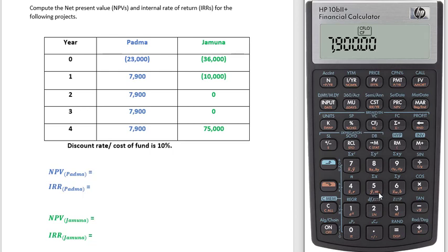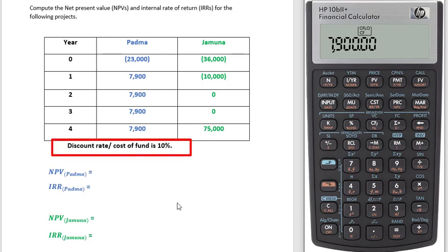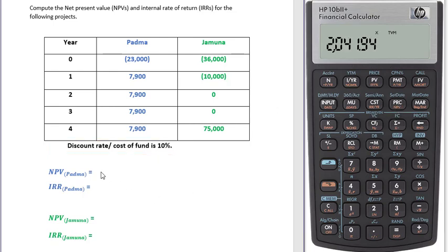Now to calculate NPV we need a percentage — a discount rate, or cost of fund, or cost of capital. Here our discount rate is 10%, so enter 10, then press the I/YR interest rate button. Now calculate NPV: press the orange Shift and this button — here you can see NPV is written in orange. So our NPV for project Potta is 2,041.94.